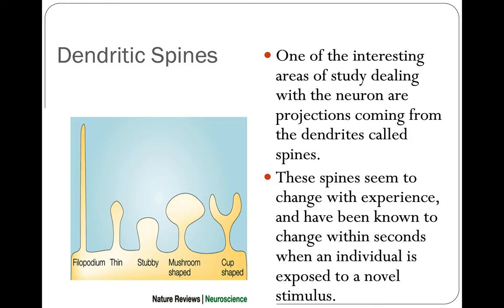One interesting area of study deals with projections coming from the dendrites called spines. These spines seem to change with experience and have been known to change within seconds when an individual is exposed to a novel stimulus. So if you learn new information and you're trying to remember it, a spine will be created so that information will stay in your brain. If you don't practice it, if you don't think about it, it will potentially go away and you will lose it.